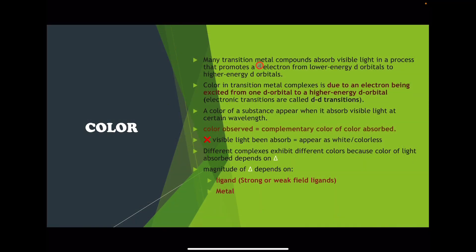Color: many transition metal compounds absorb visible light in a process that promotes a d-electron from lower energy d orbitals to higher energy d orbitals. Color in transition metal complexes is due to an electron being excited from one d orbital to a higher energy d orbital. These are called d-d transitions. A color of a substance appears when it absorbs visible light at a certain wavelength; the observed color is the complementary color of the color absorbed. If no visible light is absorbed, the substance appears white or colorless.